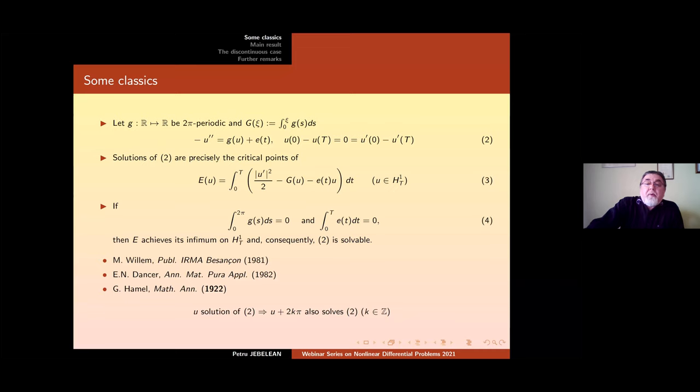If we begin with this simple problem 2 here, with g, a continuous 2π periodic function, we denote by capital G, its primitive, and consider this second order differential equation with periodic boundary conditions. Solutions of problem 2 are precisely critical points of the energy functional defined here in 3. It is defined on the Sobolev space H^1_T, meaning the functions from H^1_T which are periodic at the end of the interval [0,T].